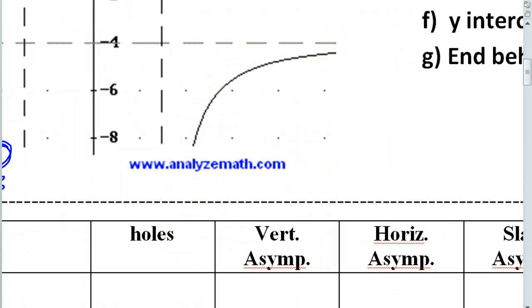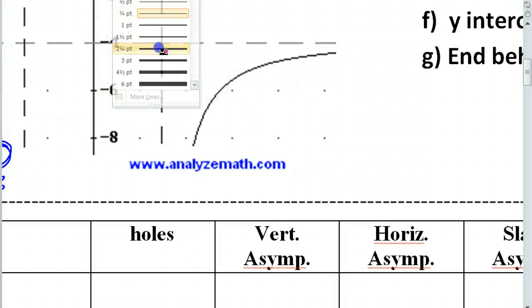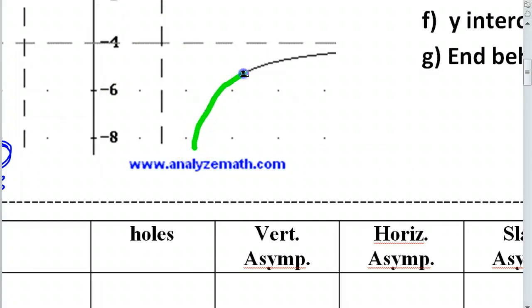All right. And then we pick up with this branch down here for the final branch. This branch is also increasing. Okay. It's increasing like this. From left to right, it's going up, up, up, up, up, up.